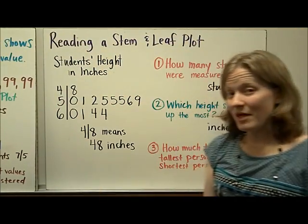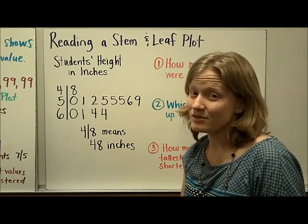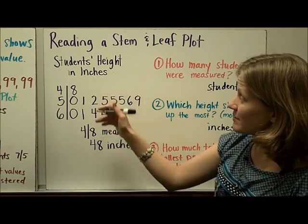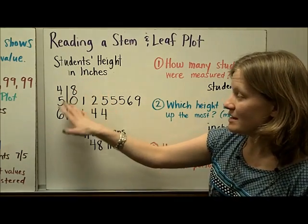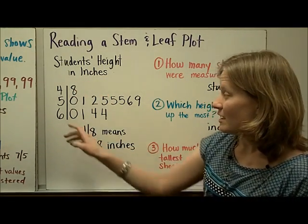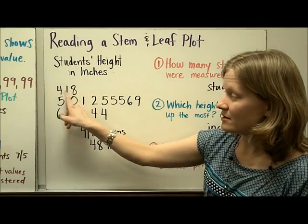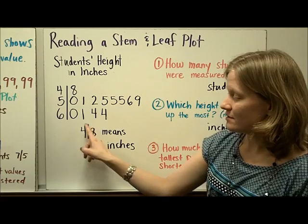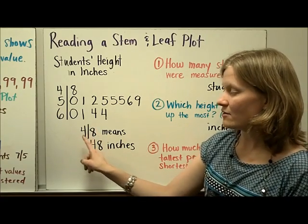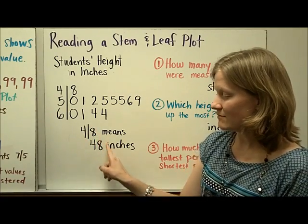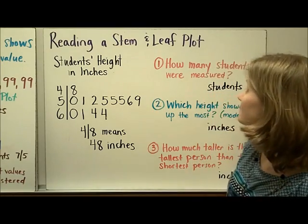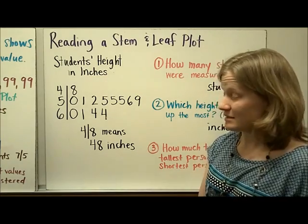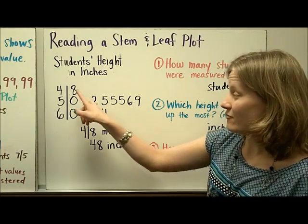Let's look at a stem and leaf plot that's already been created and answer a few questions. Here's a stem and leaf plot showing students' height in inches in a classroom. The data goes from 48 inches all the way up to 64 inches. The 4 is the stem, the 8 is the leaf, and together they represent 48 inches. First question: how many students were measured? The easiest way is to count the number of leaves.